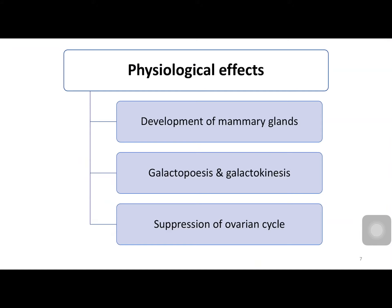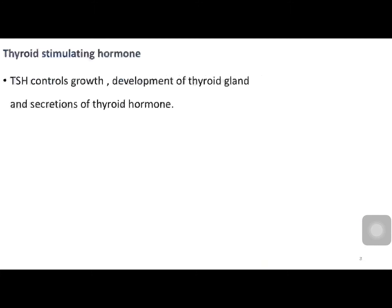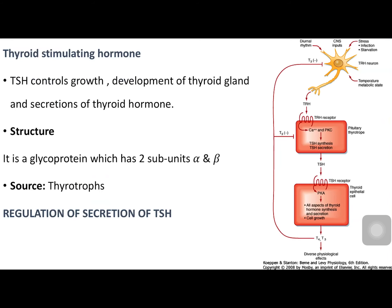That's all about prolactin. Now moving on to thyroid stimulating hormone, released from the anterior pituitary. Thyroid stimulating hormone mainly controls the growth and development of the thyroid gland and also secretion of thyroid hormone. Structurally it is a glycoprotein, and the source is thyrotrophs. Its regulation is influenced mainly by diurnal rhythm, inputs from the central nervous system, and stress.